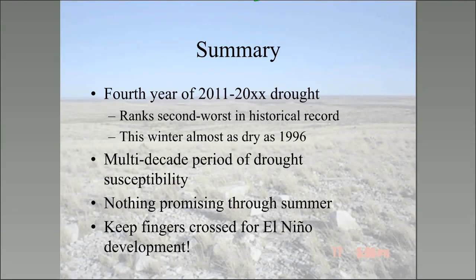To summarize where we are: we're in the fourth year of this drought, which ranks second worst in history, and in the middle of an unusually dry winter on top of the long-term drought. There may be serious issues with lack of hay production due to lack of ground moisture. A lot depends on what we get in April, May, and June. And once this drought is over, there'll probably be another not too far in the future, because the long-term patterns are favoring drought in Texas for at least this decade.